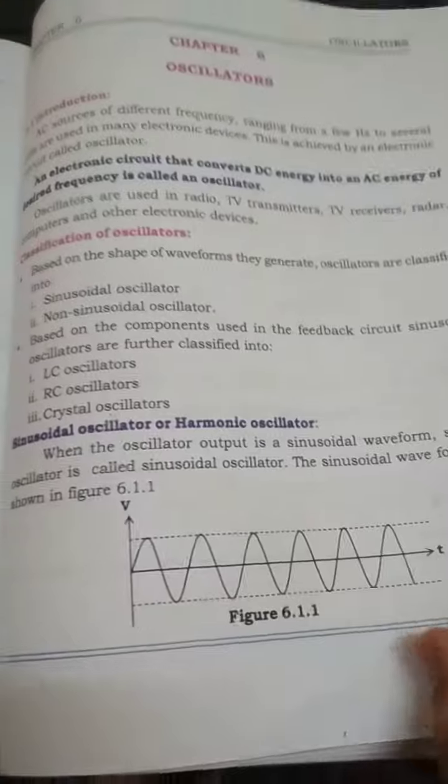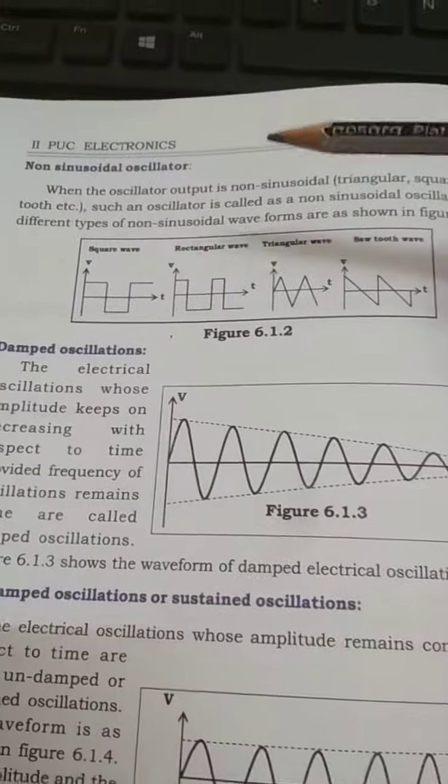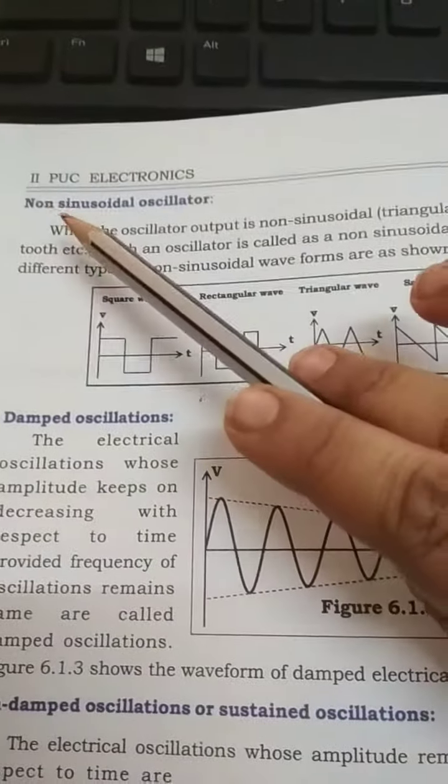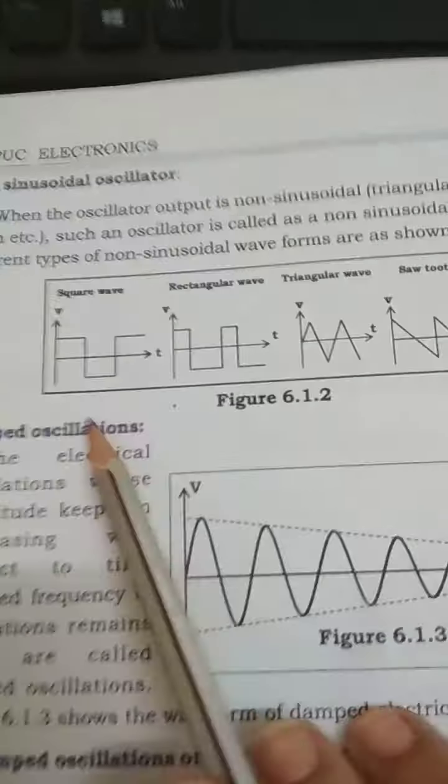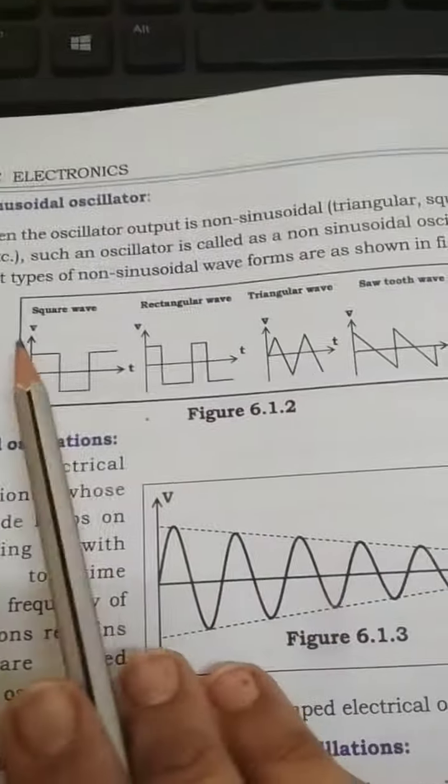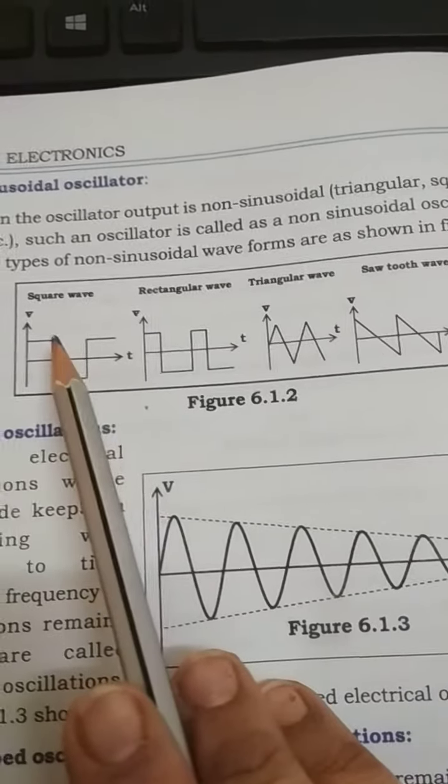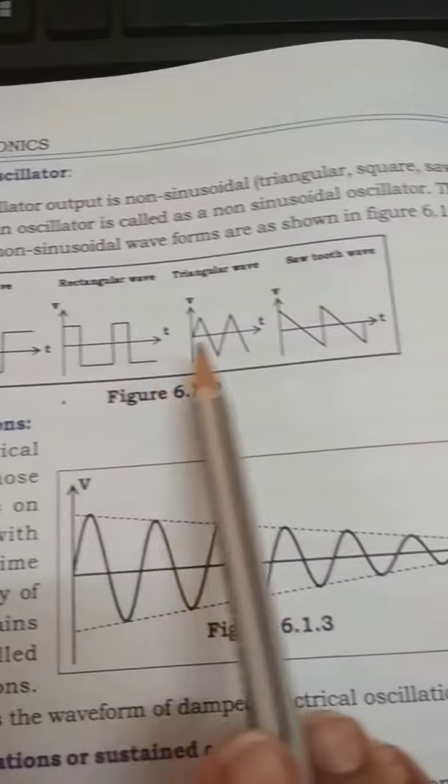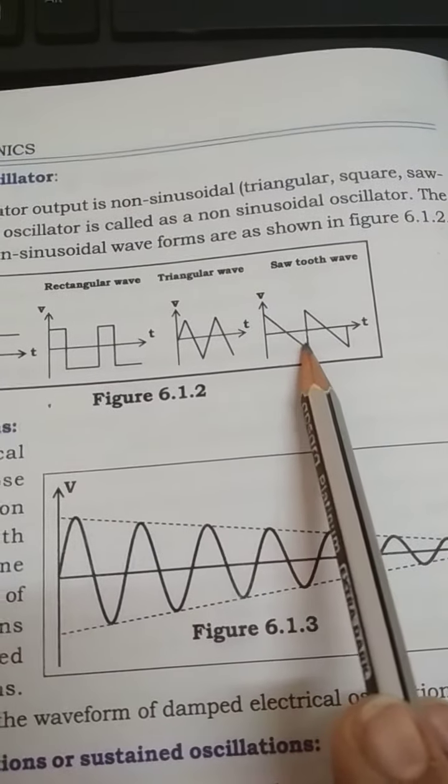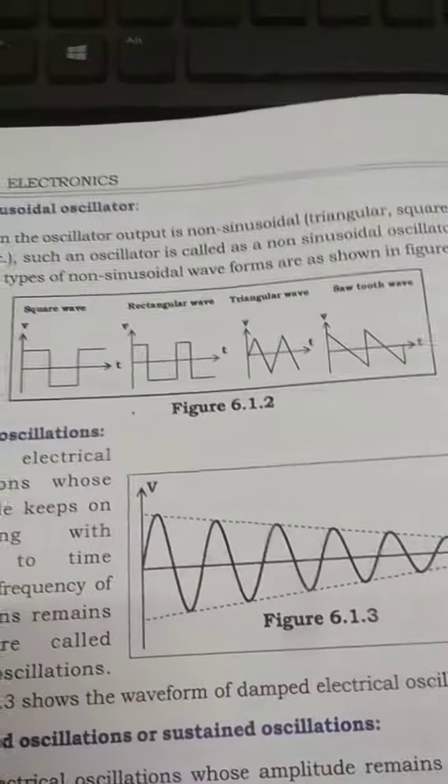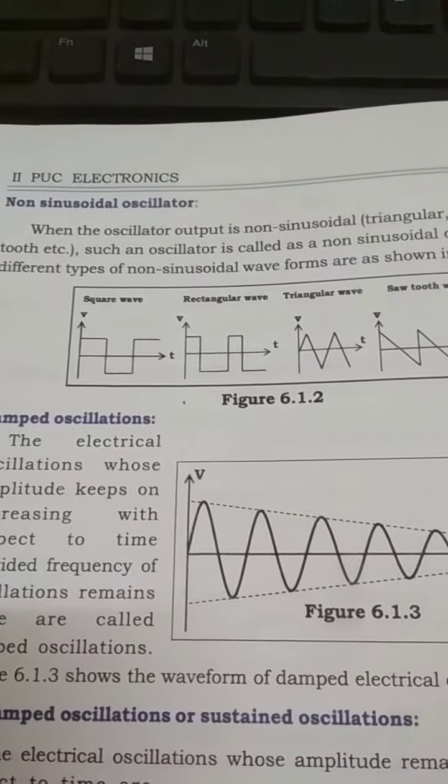These oscillations, when it comes to oscillations, can be either sinusoidal or non-sinusoidal. In this non-sinusoidal we have different types of waveform. See this is a square wave, this also is an oscillation but it is square type. This is rectangular wave, triangular wave and sawtooth wave. These are the different types of non-sinusoidal oscillations.